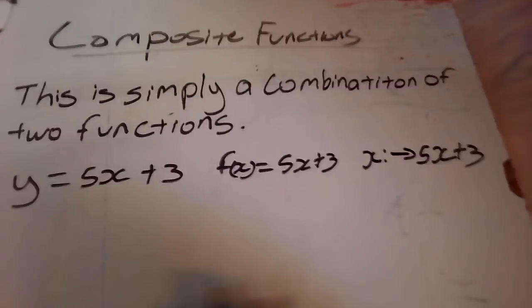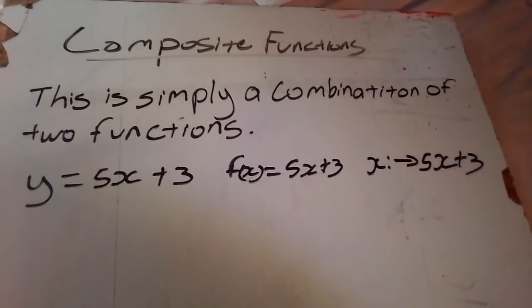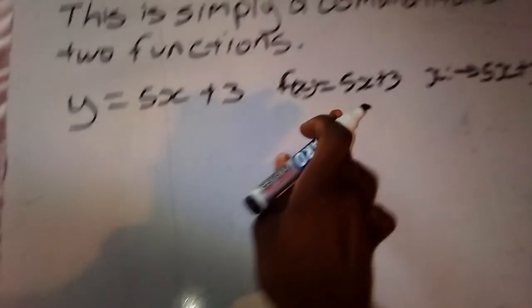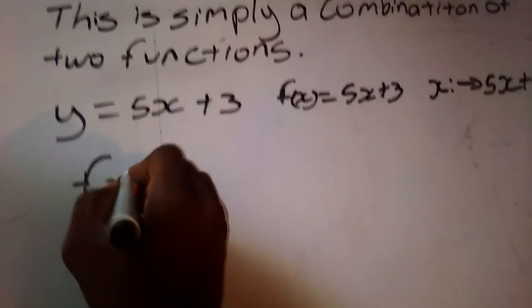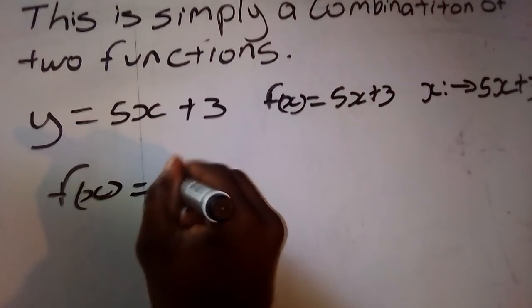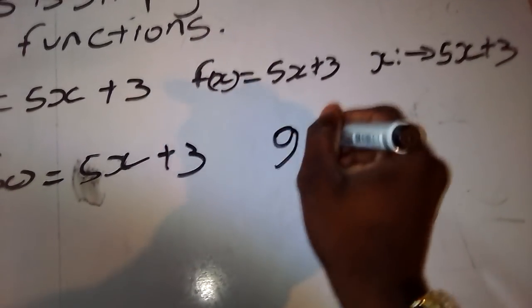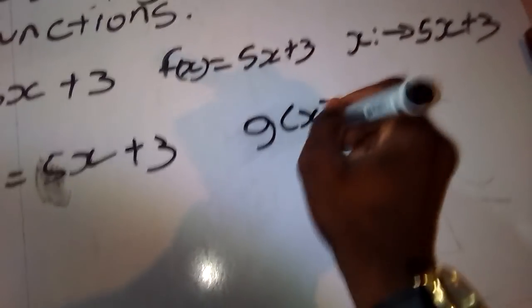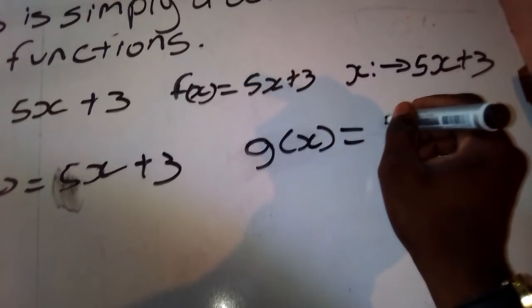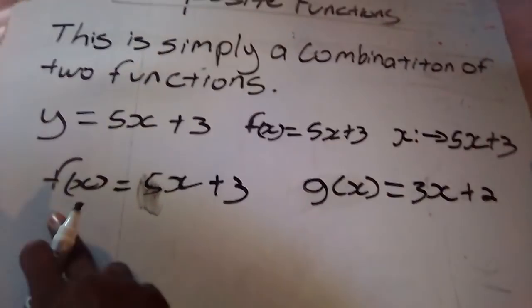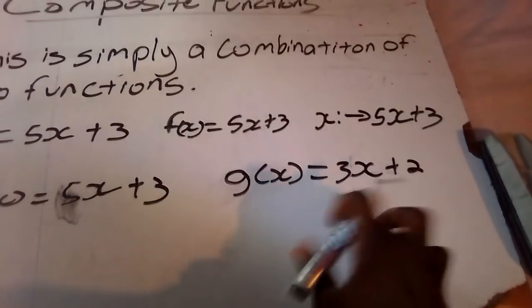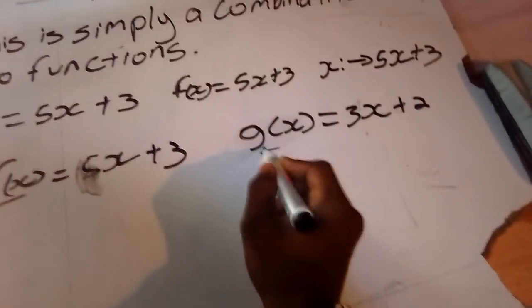So let's combine two functions together as an example. Let f of x equal to 5x plus 3, and let's define another function — I'll name it g of x — equal to 3x plus 2. So here we have one function and there we have another function, and now we can start with the actual work on composite functions.